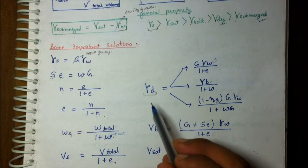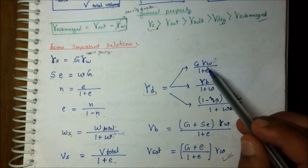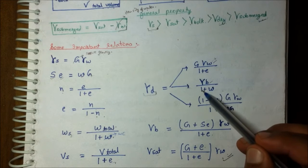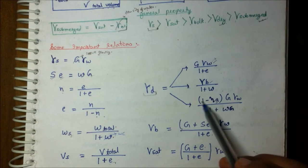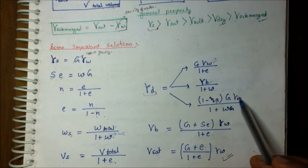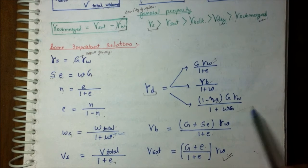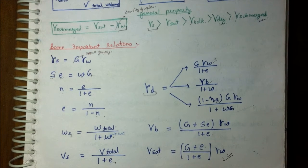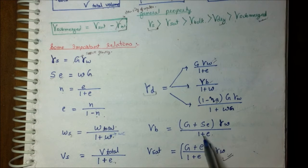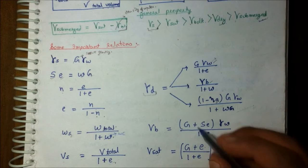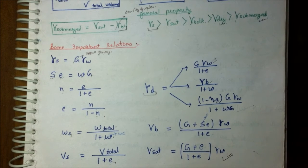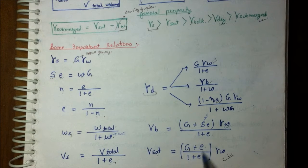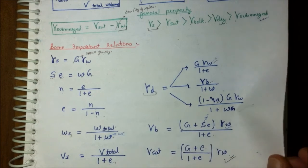For dry density, we have three formulae: gamma D equals G gamma W upon (1 plus E); or gamma B upon (1 plus w) where w is water content; or (1 minus η_A) times G times gamma W upon (1 plus wG). For bulk density: gamma bulk equals (G plus SE) times gamma W upon (1 plus E), where S is degree of saturation. Gamma saturated equals (G plus E) upon (1 plus E) times gamma W.